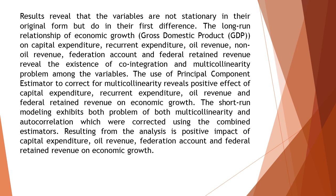Results reveal that the variables are not stationary in their original form but become stationary in their first difference. The long-run relationship of economic growth (GDP) on capital expenditure, recurrent expenditure, oil revenue, non-oil revenue, federation account, and federal retained revenue reveals the existence of co-integration and a multicollinearity problem among the variables. The use of the principal component estimator to correct for multicollinearity reveals a positive effect of capital expenditure, recurrent expenditure, oil revenue, and federal retained revenue on economic growth. The short-run modeling exhibits both problems of multicollinearity and autocorrelation, which were corrected using the combined estimators.